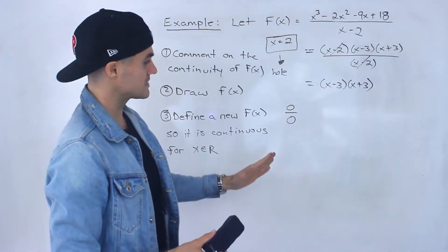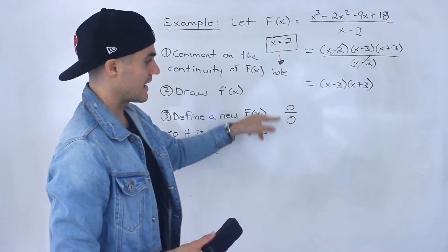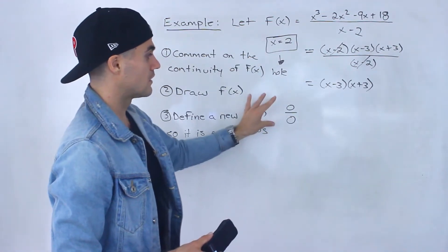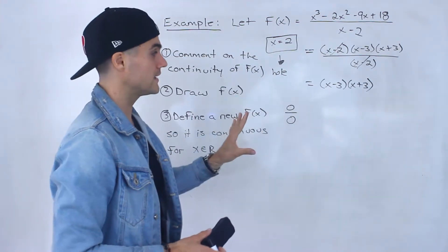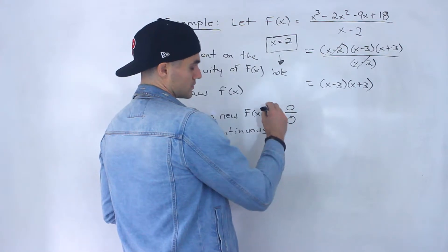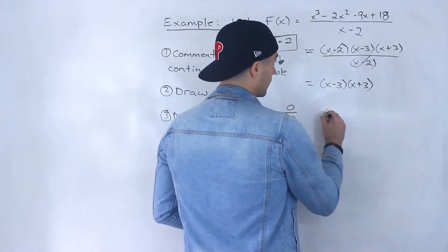And for the vast majority of the cases, if you end up getting this kind of form, it usually means at that x value, there's going to be a hole. Not always, but for the majority of the cases. So just to kind of expand on that, what I just said,